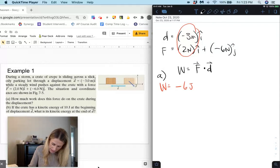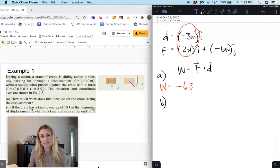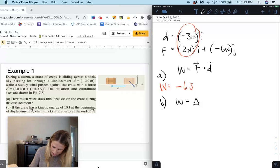And then for letter B it says if the crate has a kinetic energy of 10 joules at the beginning of displacement D, what is the kinetic energy at the end of D? Now we know that work is equal to the change in energy. In this case it's a change in kinetic energy.